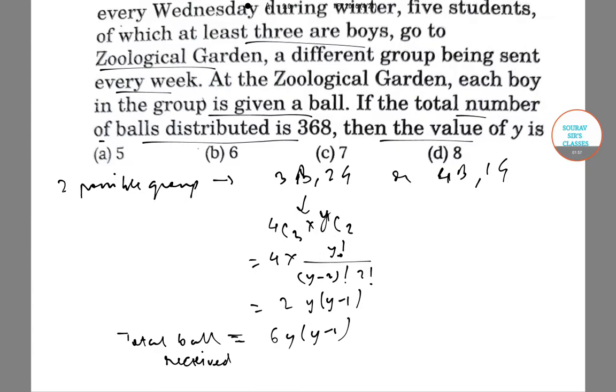Similarly, for the second group, there are four boys and one girl. So the number of ways is 4C4 into yC1, which is equal to y.